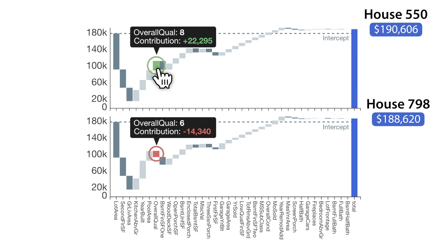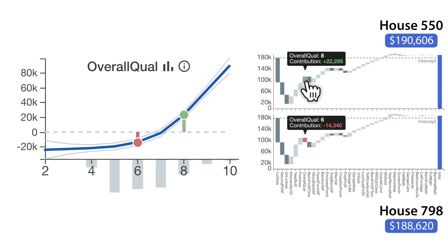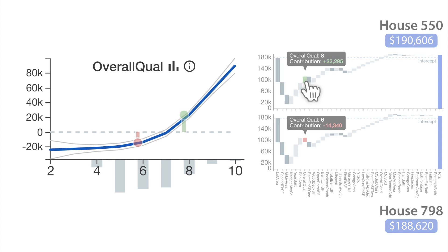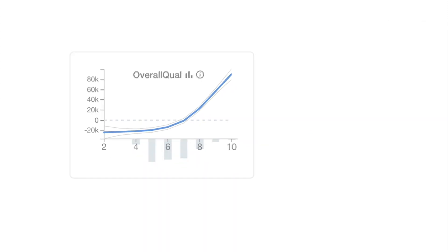Instead of looking at just two houses, let's see the effect that the feature overall quality has on the entire model. Here we see a global explanation for this feature. We see having an overall quality less than 7 hurts your prediction and having one greater than 7 helps it. In Gamut, you can look at explanations like these for any feature of the model.